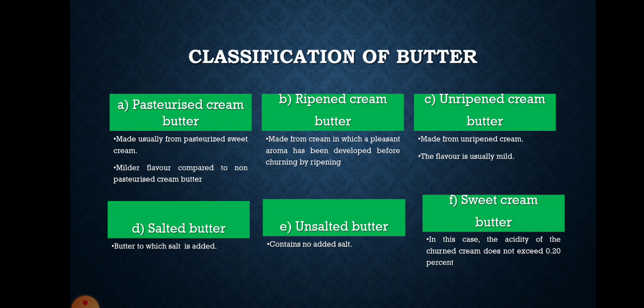The first type is pasteurized cream butter — it is made usually from pasteurized sweet cream and usually has a milder flavor than that made from similar cream not pasteurized. The next is ripened cream butter — it is made from cream in which a pleasant, delicate aroma has been developed before churning by ripening. Ripening means inoculating the cream with a butter culture and holding it at a desired temperature. Properly made ripened cream butter has a delicate flavor, sometimes referred to as real butter flavor.